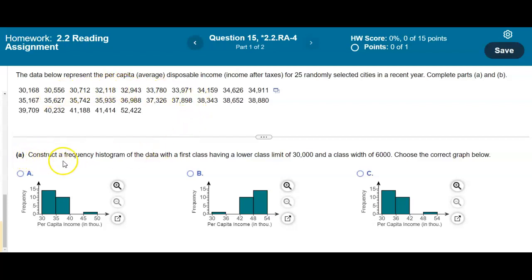So in part A, we want to construct a frequency histogram of the data with a first class having a lower class limit of 30,000 and a class width of 6,000. And we're going to choose the correct graph below.